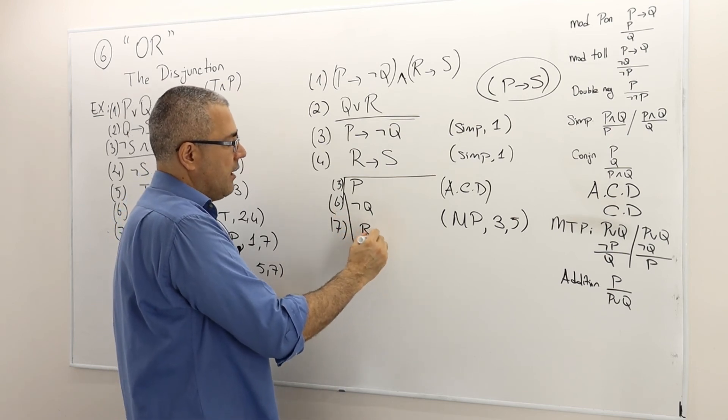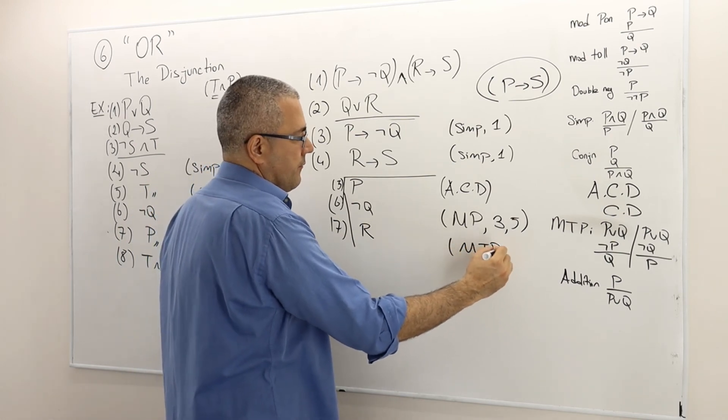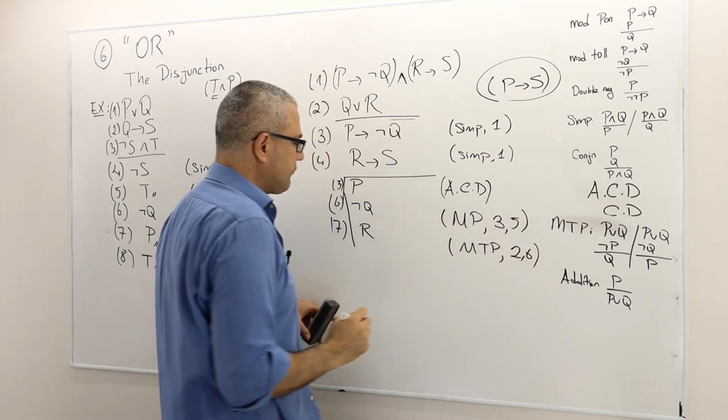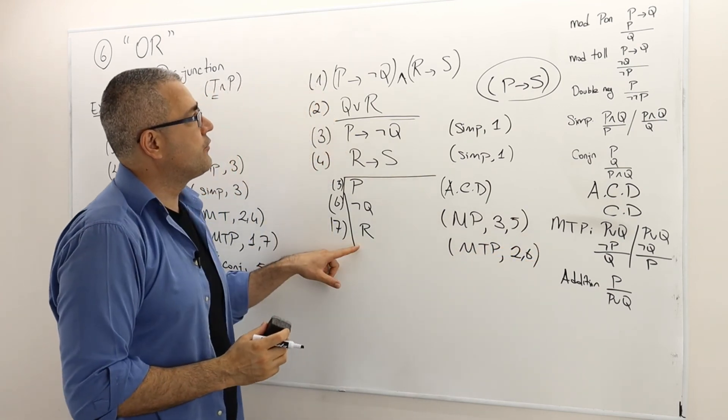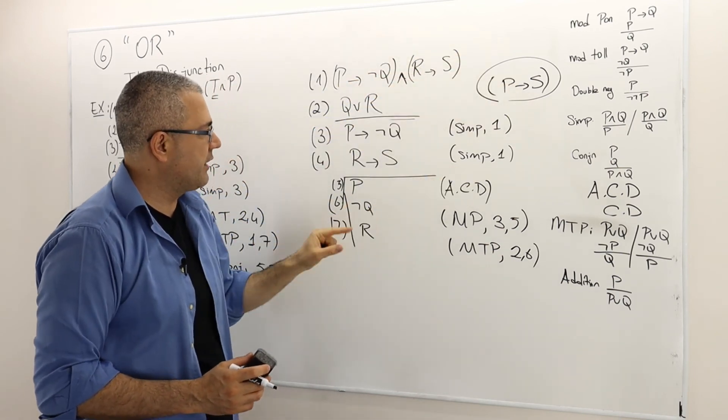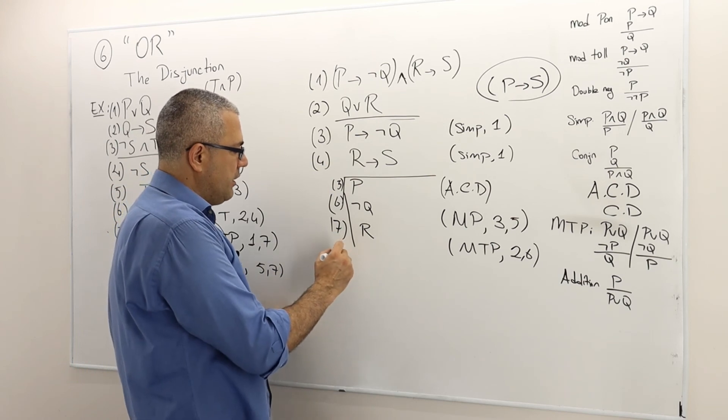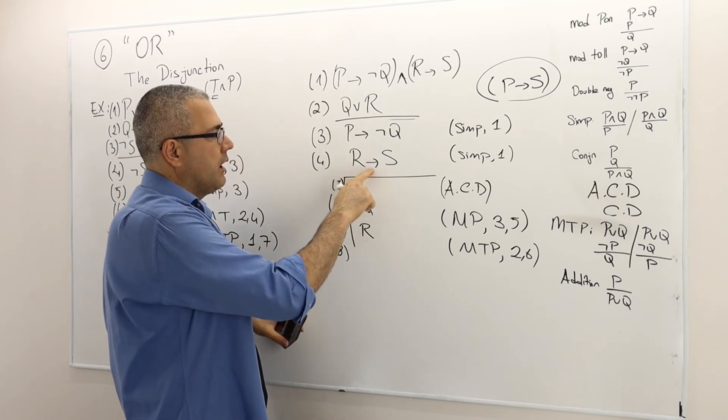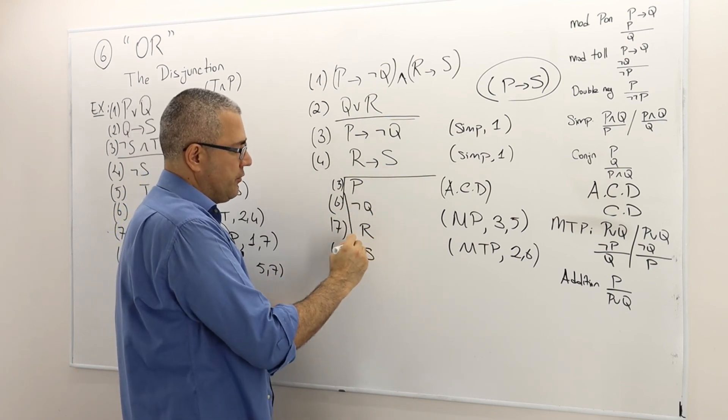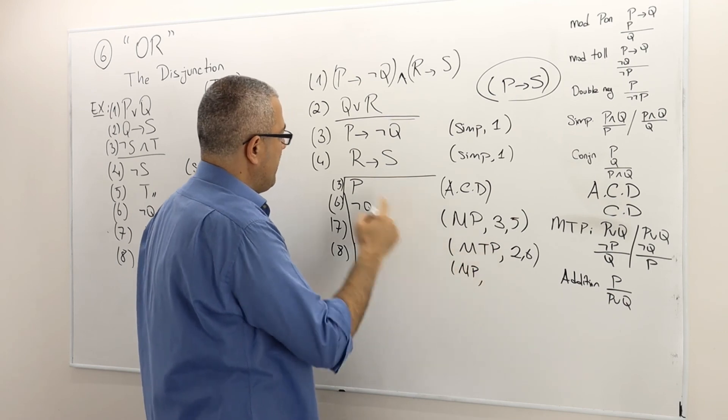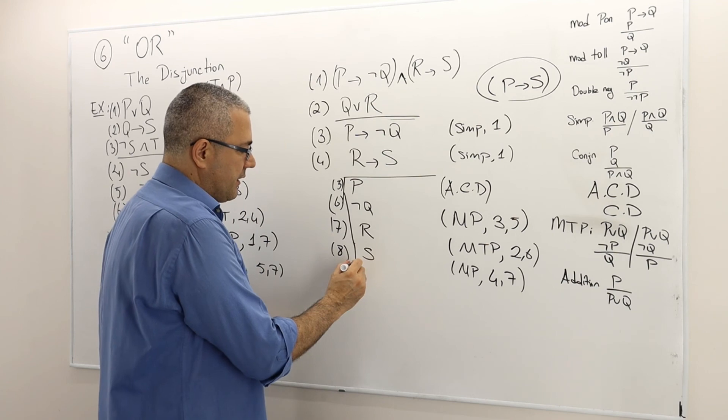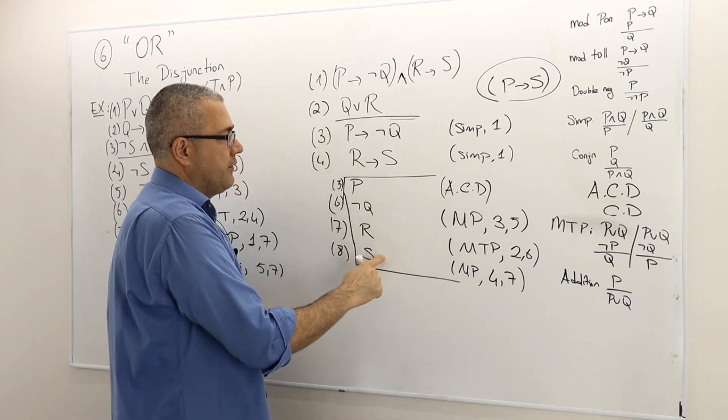So R is true very well, but I am trying to reach P implies S. So I need to get S. Very well. I can use line four. R implies S is true. R is true. By modus ponens, S must be true as well. So this is modus ponens between line four and seven. So that's it. I proved if P is true, S must be true.